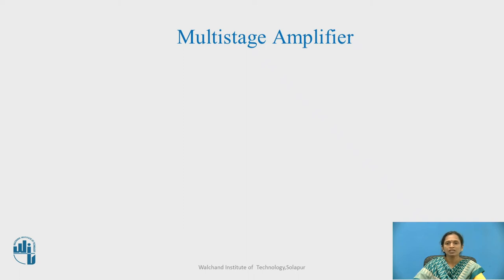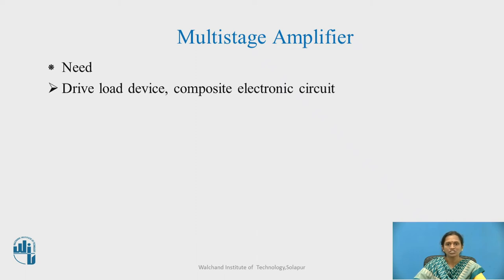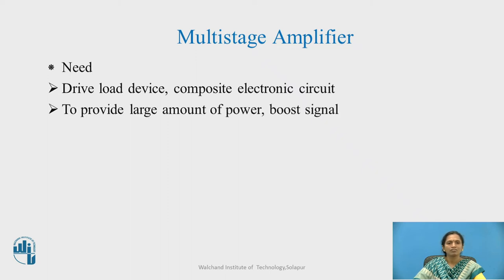Physically, voltage gain or current gain depends on the circuit parameters and the device parameters, but there is a physical limitation on the gain of the amplifier, and that can be fulfilled with the help of a multistage amplifier. To drive the load device with large current, we need this multistage amplifier, as well as for the composite electronic circuit. It will also provide a large amount of power to boost the signal.